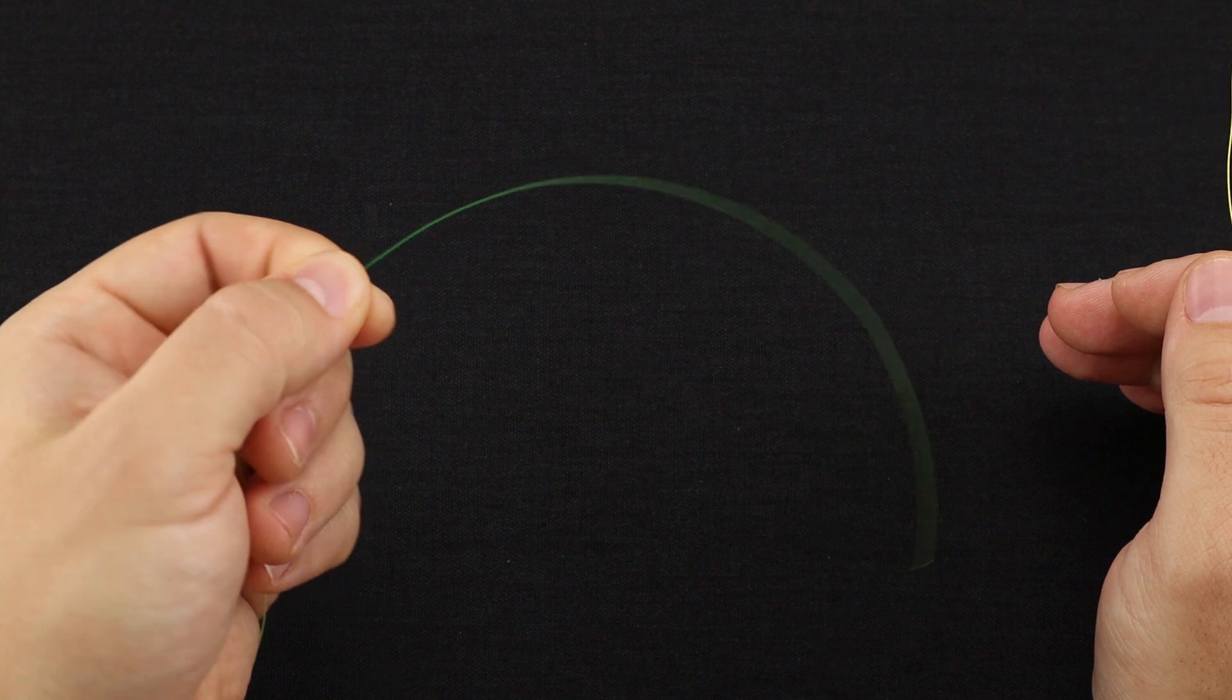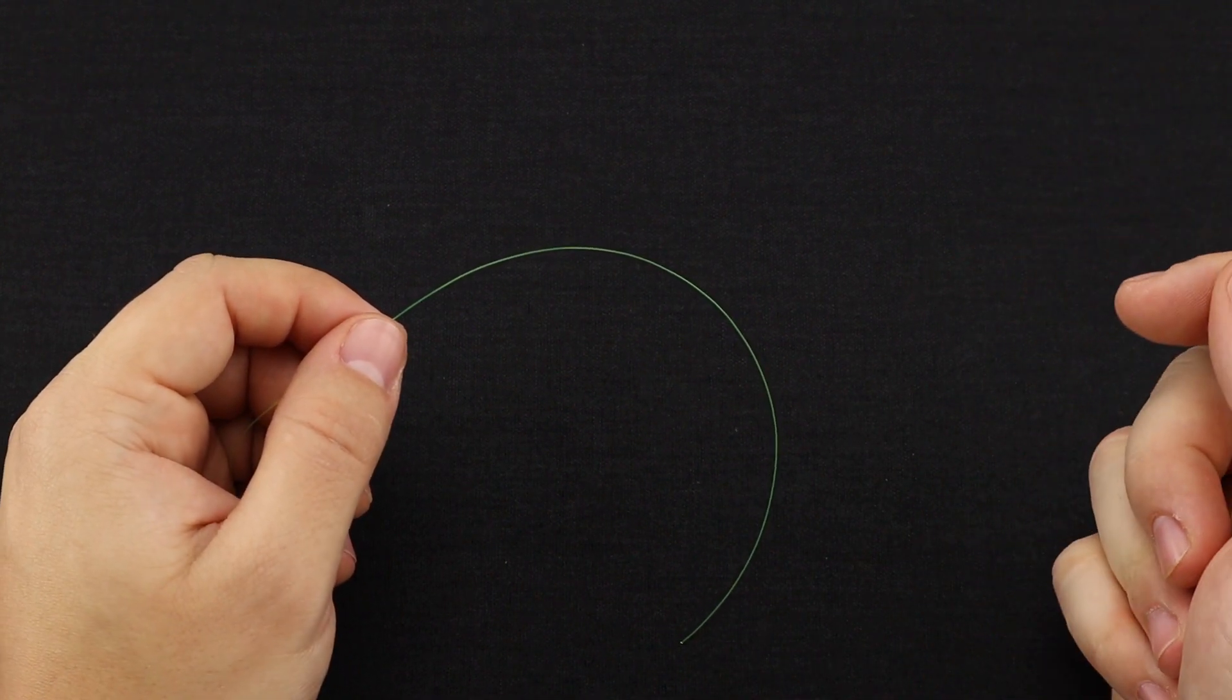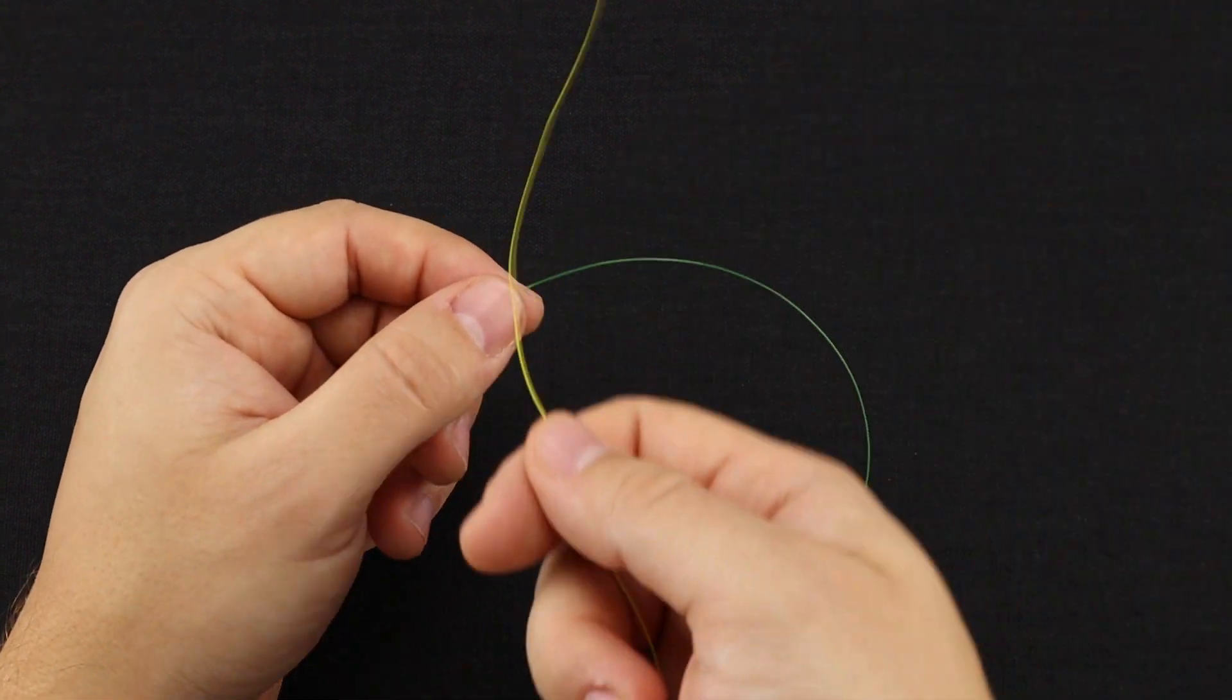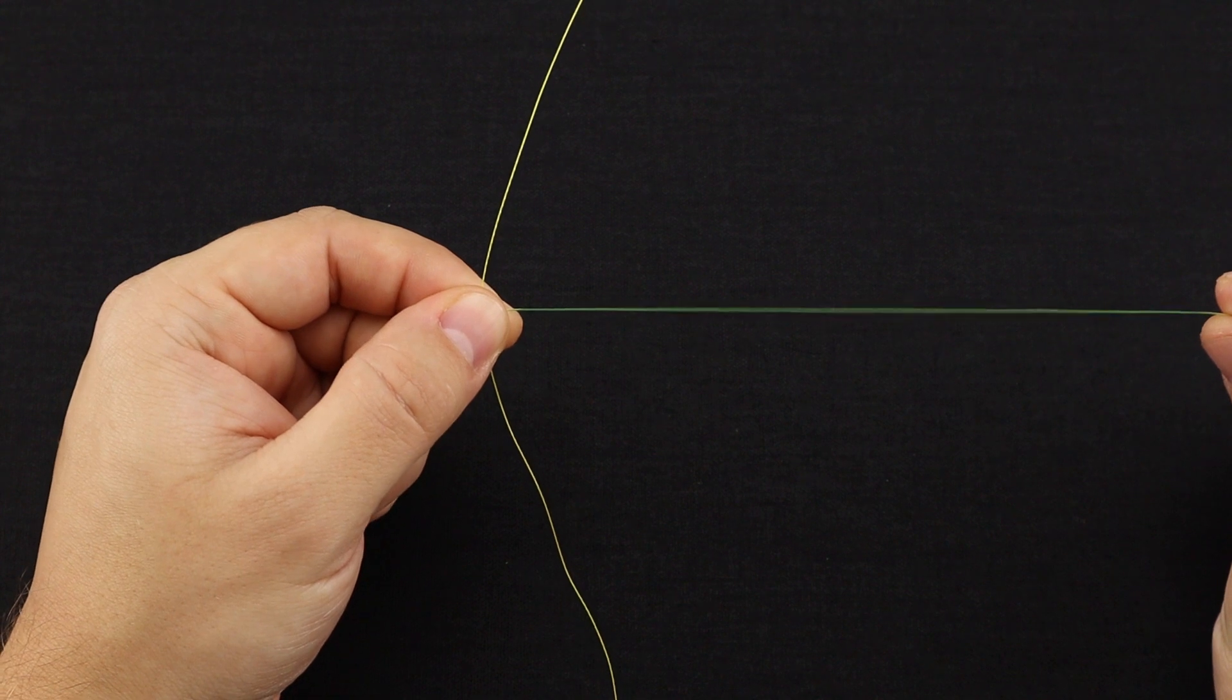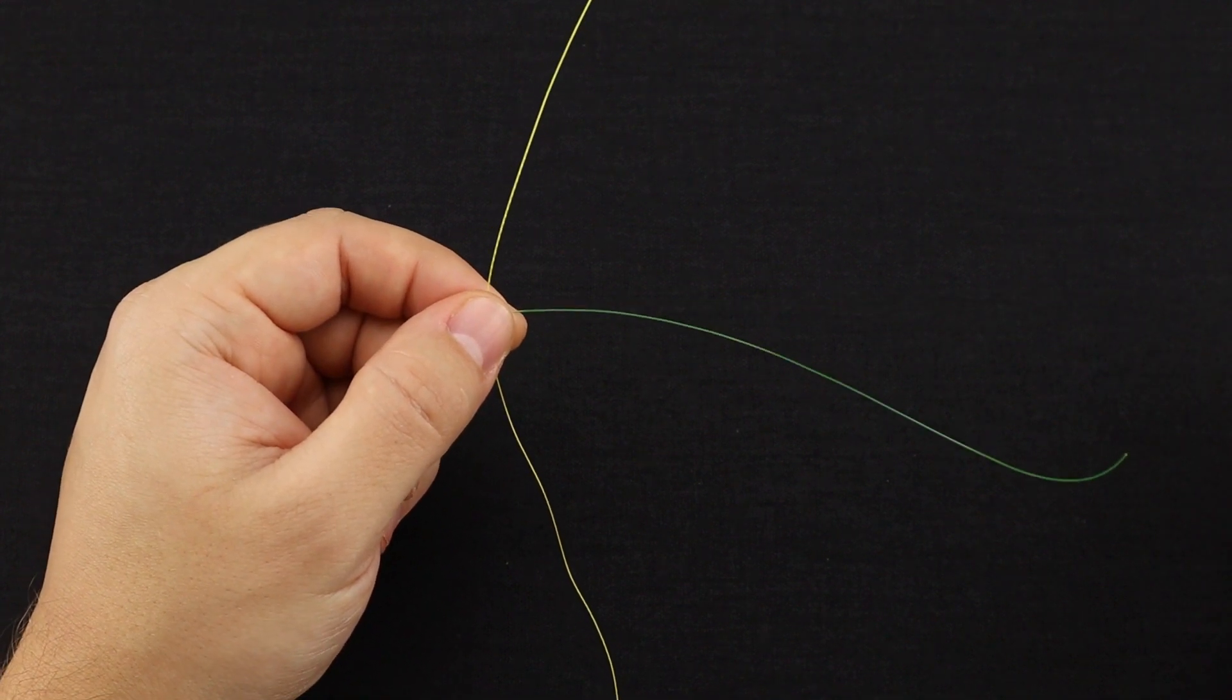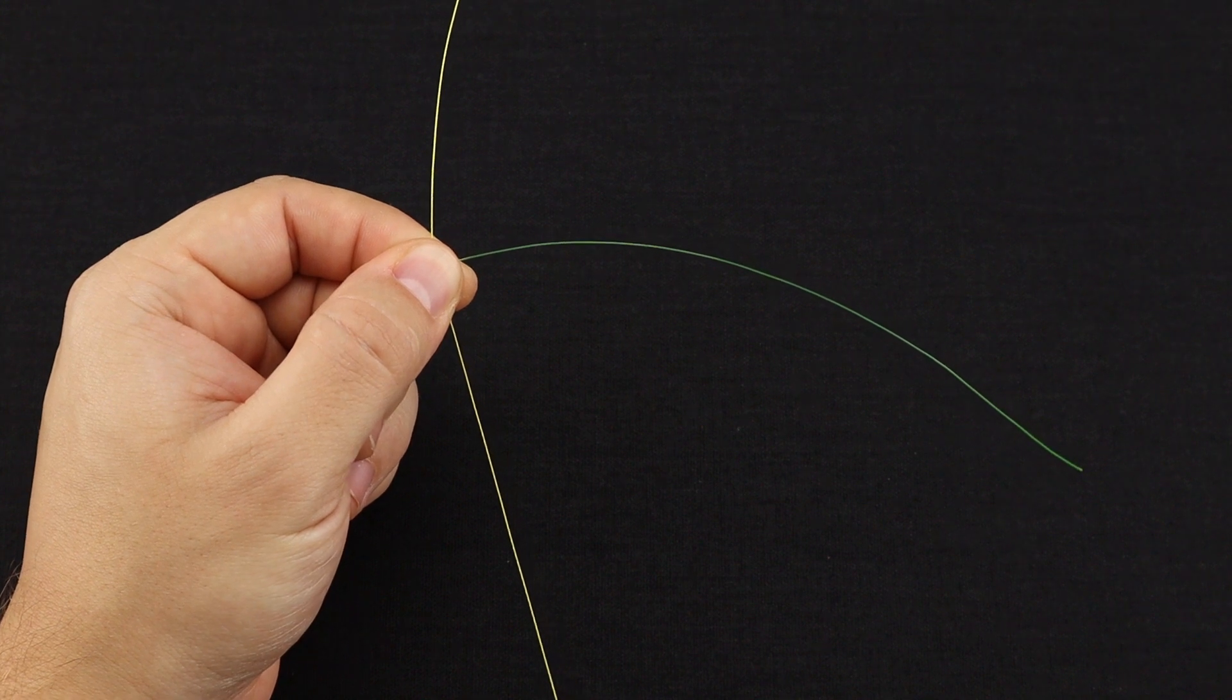On my left I have my monofilament line I'll be using, the green line, and the right is my yellow braid. And the first step is to lay your braid on top of your monofilament, creating a cross, and have about six inches of monofilament tag end to work with here. And then on the bottom we have about eight to ten inches of braid to work with.